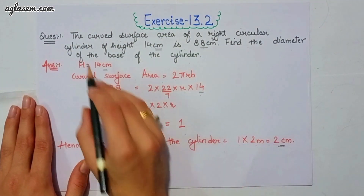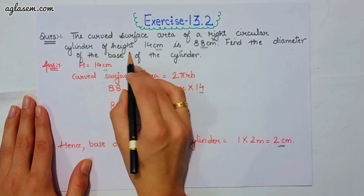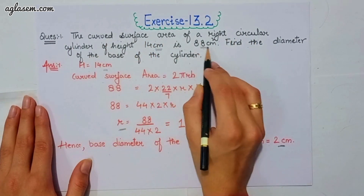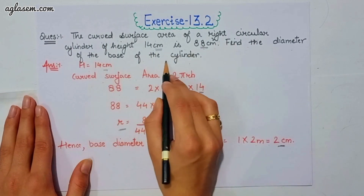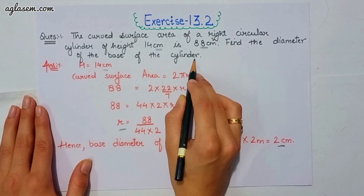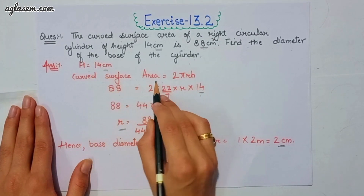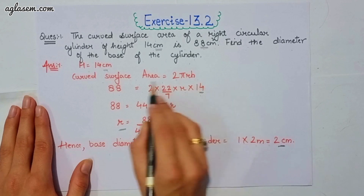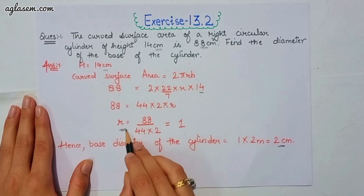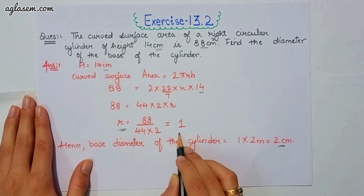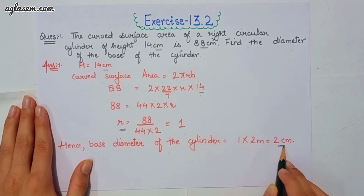Our first question says: the curved surface area of a right circular cylinder of height 14 cm is 88 cm². We have to find the diameter of the base. Height is given as 14 cm. Applying the formula for curved surface area, 2πrh, we get radius r = 1 cm. So the base diameter is 1 × 2 = 2 cm.